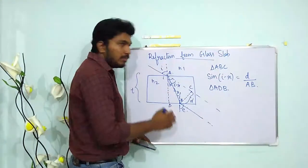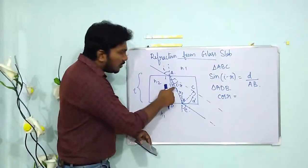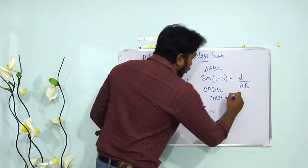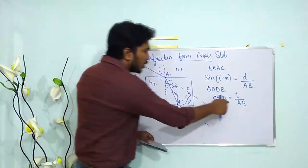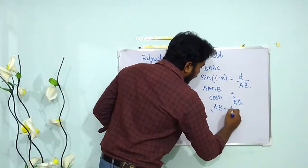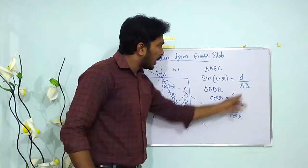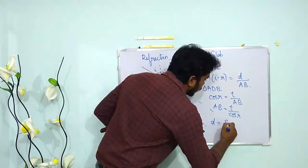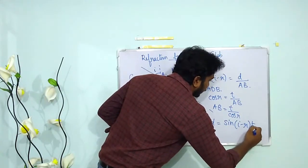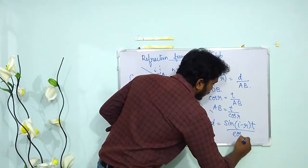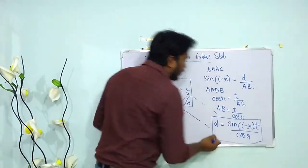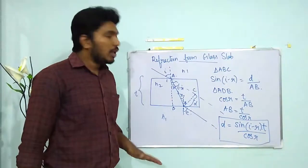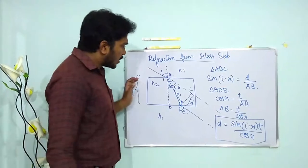Now extend the normal and mark point D. In triangle ADB, cos r = adjacent side over hypotenuse, where the adjacent side is the thickness t and the hypotenuse is AB. So AB = t / cos r. Substituting this value of AB into the expression from triangle ABC, we get: d = sin(i − r) · t / cos r.